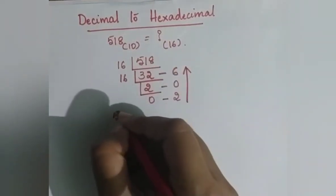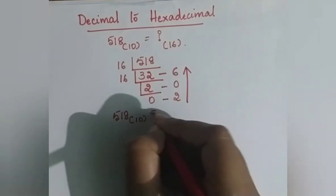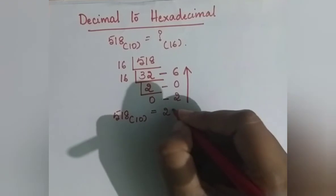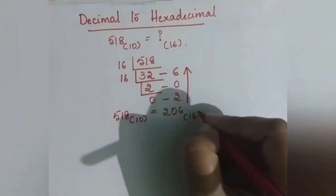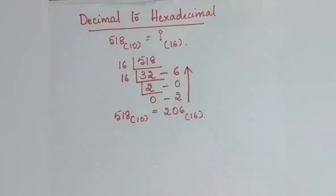So, the value of 518 base 10 is equal to 206 base 16. Base is very important while writing the answer.